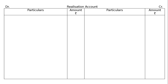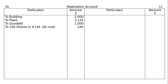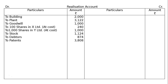This is the Realization Account. We have to prepare the Realization Account, Partners' Capital Accounts of A, B and C, and Bank Account. In the Realization Account, we will write down: to Building Rs. 2000, to Plant Rs. 3122, to Goodwill Rs. 1000, to 100 shares in X Limited at cost Rs. 240, to 1000 shares in Y Limited at cost Rs. 1000, to Stock Rs. 1124, to Debtors Rs. 874, to Patents Rs. 3808, to By Creditors Rs. 1121.